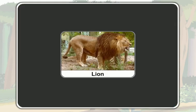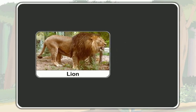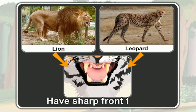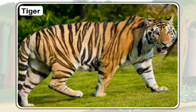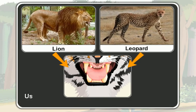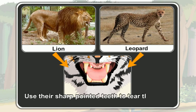Carnivores, like a lion and a leopard, also have sharp front teeth. Like the tiger, carnivores like a lion and a leopard use their sharp, pointed teeth to tear the flesh of other animals.